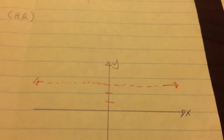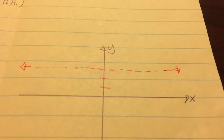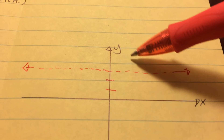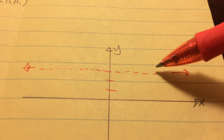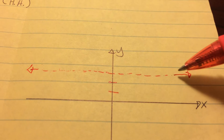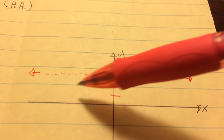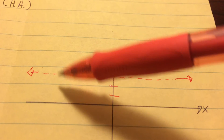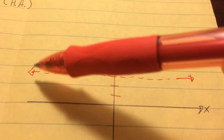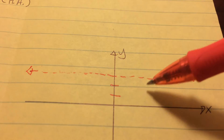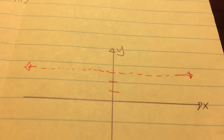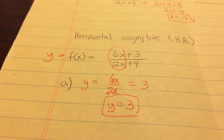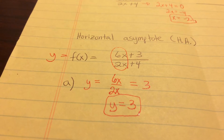With the horizontal asymptote, the function can actually cross over in the middle part, come back down, and then ride really close to it as x approaches infinity. As x approaches negative infinity, it rides really close — above or below — but never crossing or touching it as we reach infinity. But there is a possibility it may cross somewhere in the body of the graph.